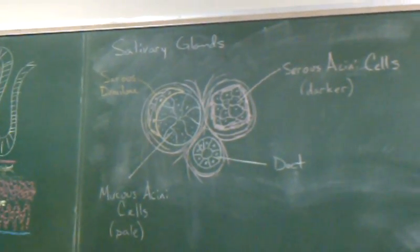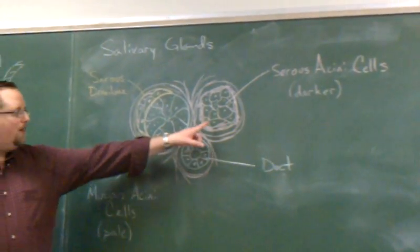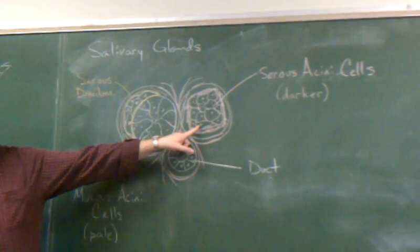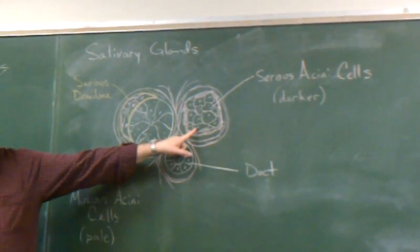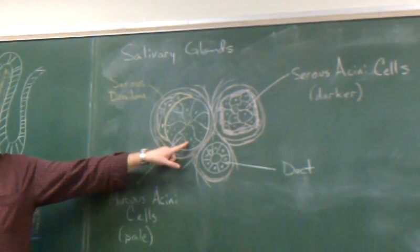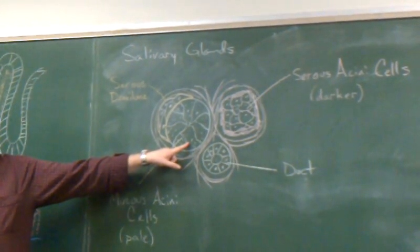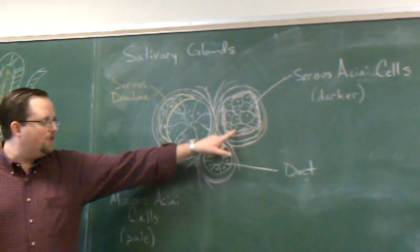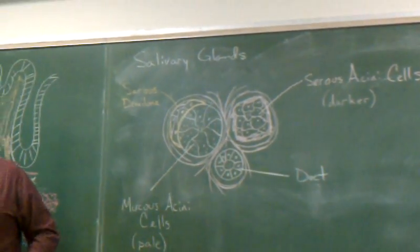What we're going to be focusing on are cells that are irregular in shape but very pale and granular in their cytoplasm. The darker ones are always the serous cells. The paler ones are always the mucous cells.